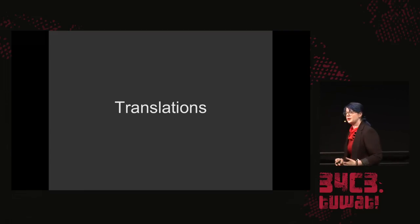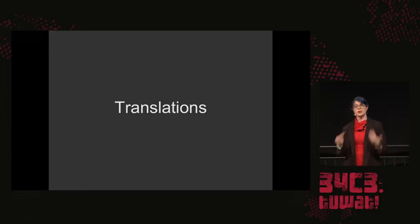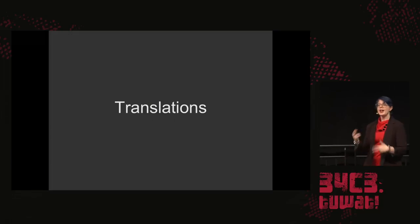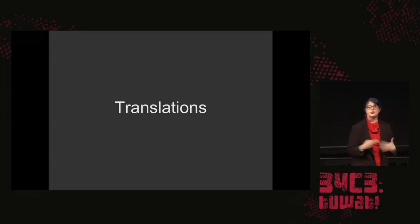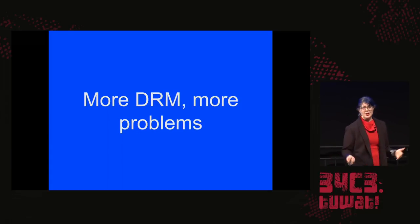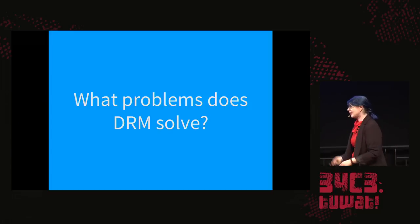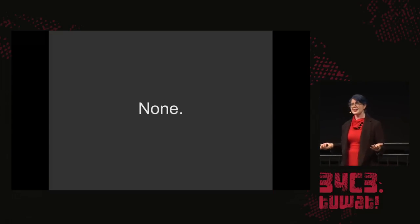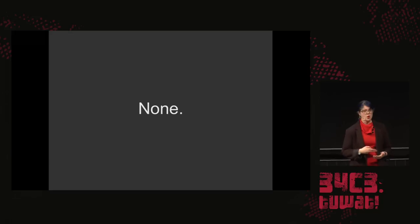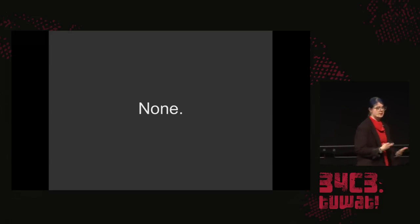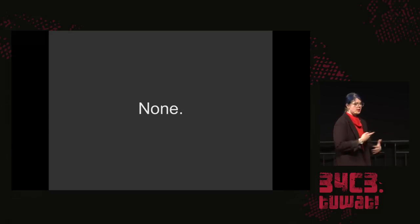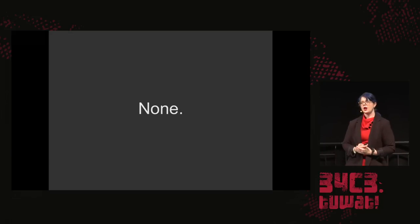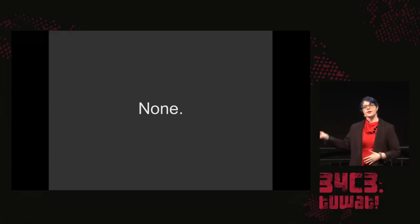Translations — this is kind of related to accessibility. If you have someone who only speaks one given language, like me — I only speak English — I need to have things translated for me, but when you have these restrictions, that can't be done. So DRM causes lots of problems. Does it solve any problems? People still really insist that it does, but it turns out it doesn't solve any of them. One of the things people talk about when they talk about DRM is pirating, people taking things, loss of profits. It turns out there's been very little, if any, repercussion for not having DRM on media.